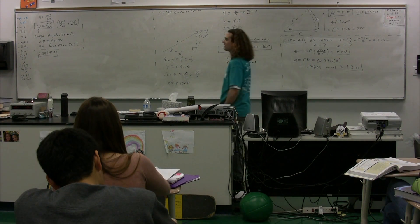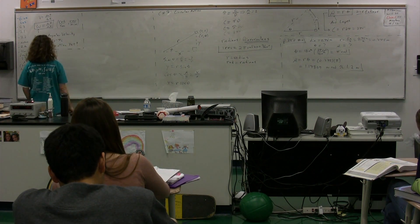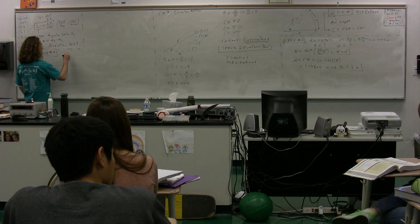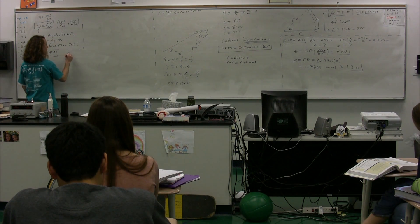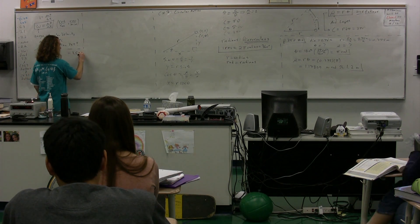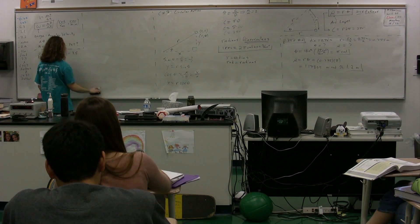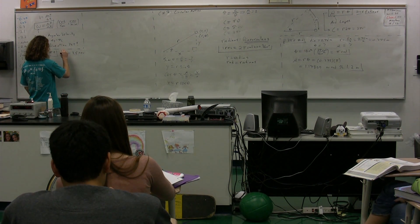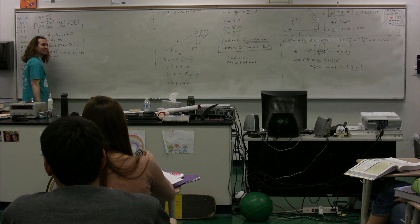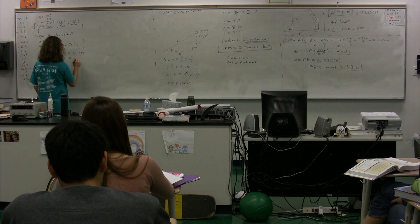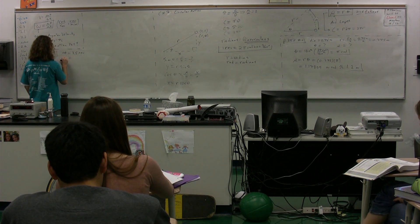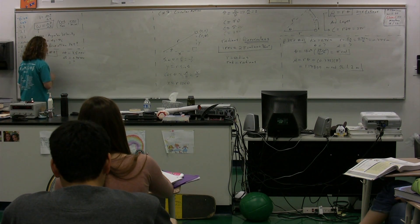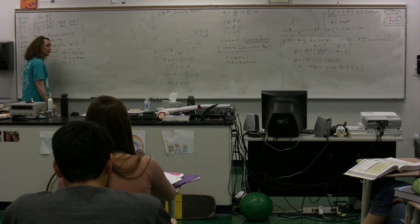A car tire rotates counterclockwise 3.5 times. So that's 3.5 revolutions, and it's actually delta theta, the change in position. At a time interval of 0.75 seconds, delta t equals 0.75 seconds. What is the angular speed of the tire? Omega equals question mark.